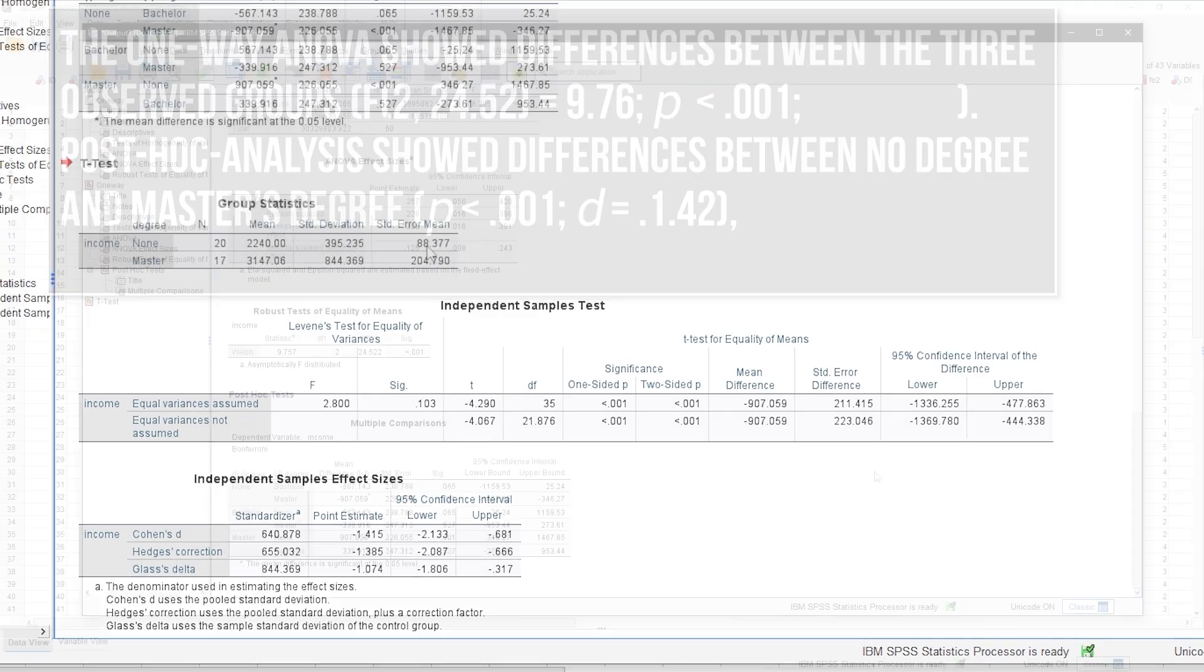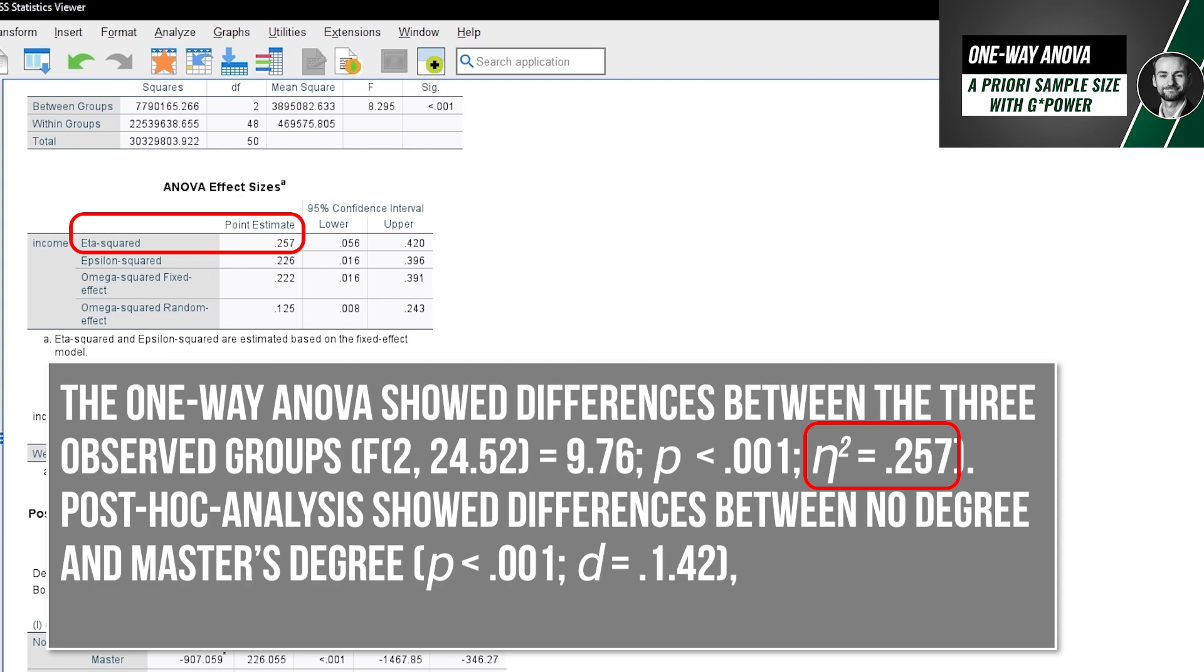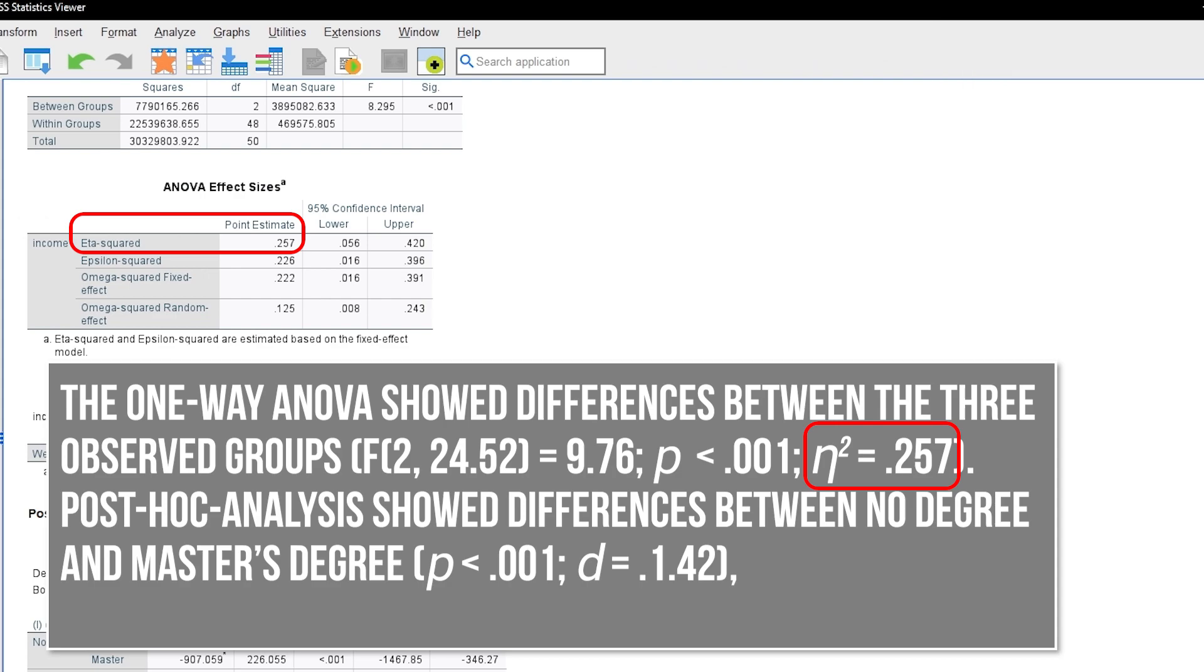It might also be helpful to report the overall effect size of the ANOVA, for other researchers having to do an a priori power analysis for their research. Eta squared or F are the most common ones. Omega squared is being used more often recently.